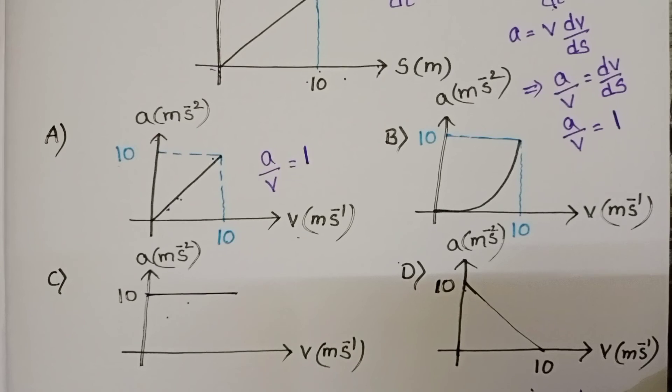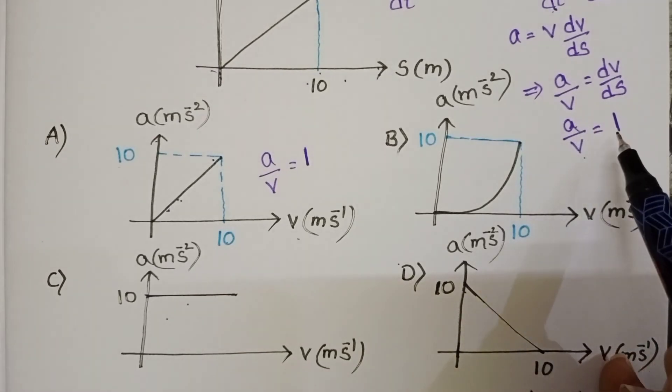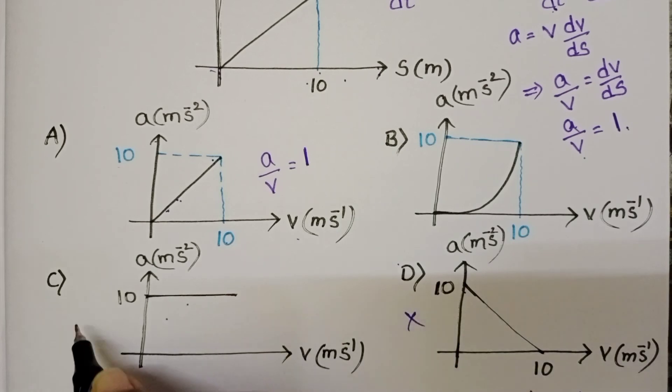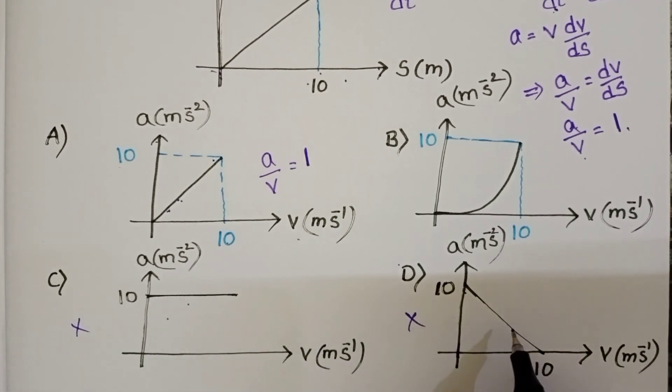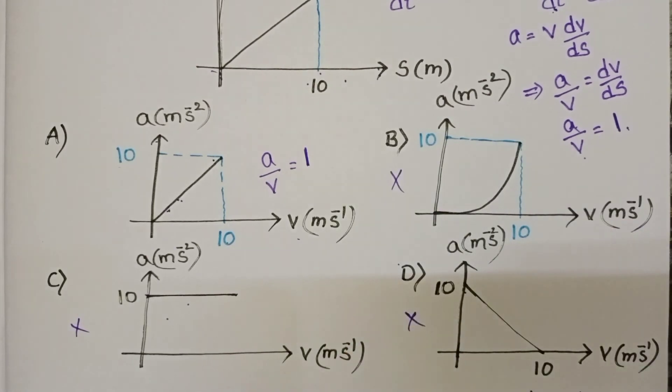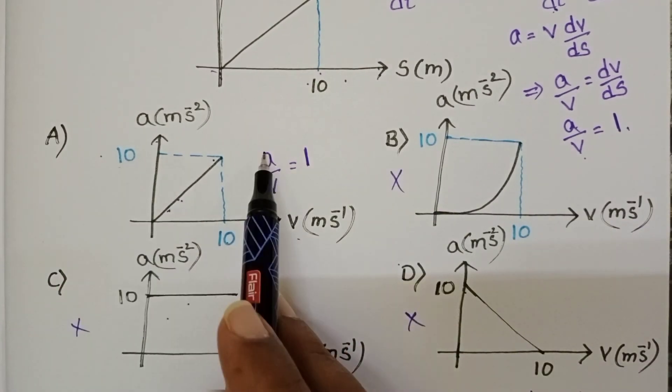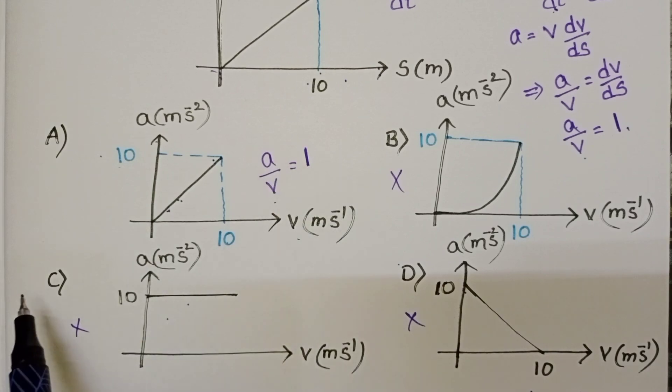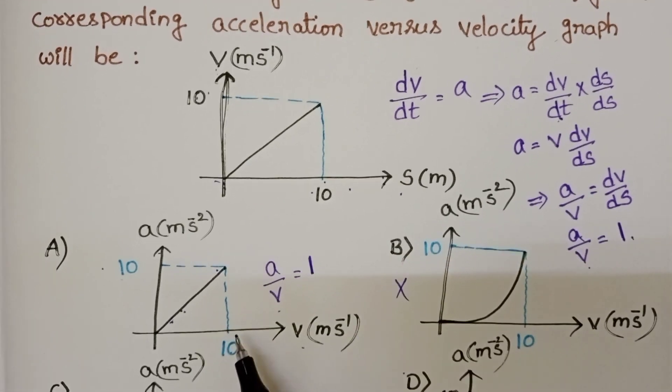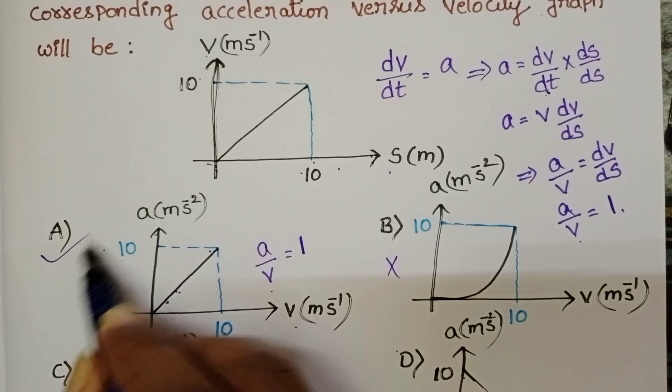But we found the slope a by v equals 1. So options C and D are not correct, and B is a curve, not a straight line. In the first option, slope equals 1 and a by v equals 1. For the corresponding acceleration versus velocity graph, the first option is correct.